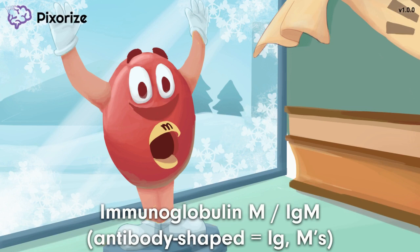IgM is one of the five major types of antibodies, or immunoglobulins. Let's explore the rest of this scene to learn what makes IgM different than other antibodies.